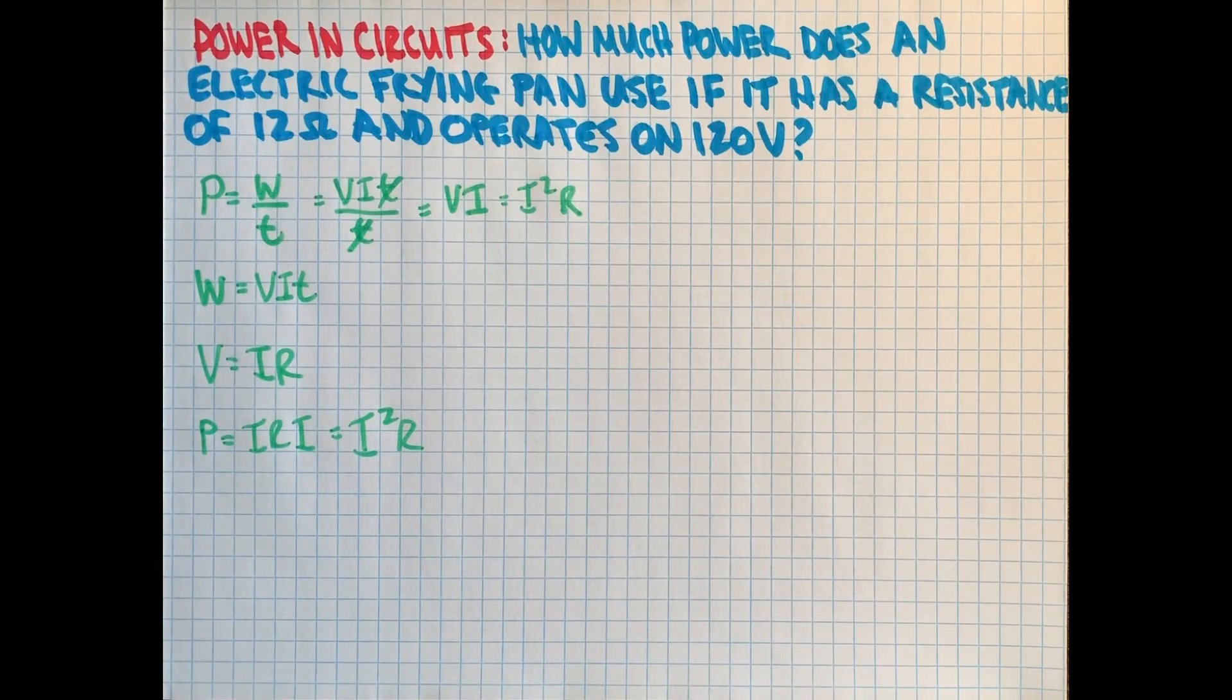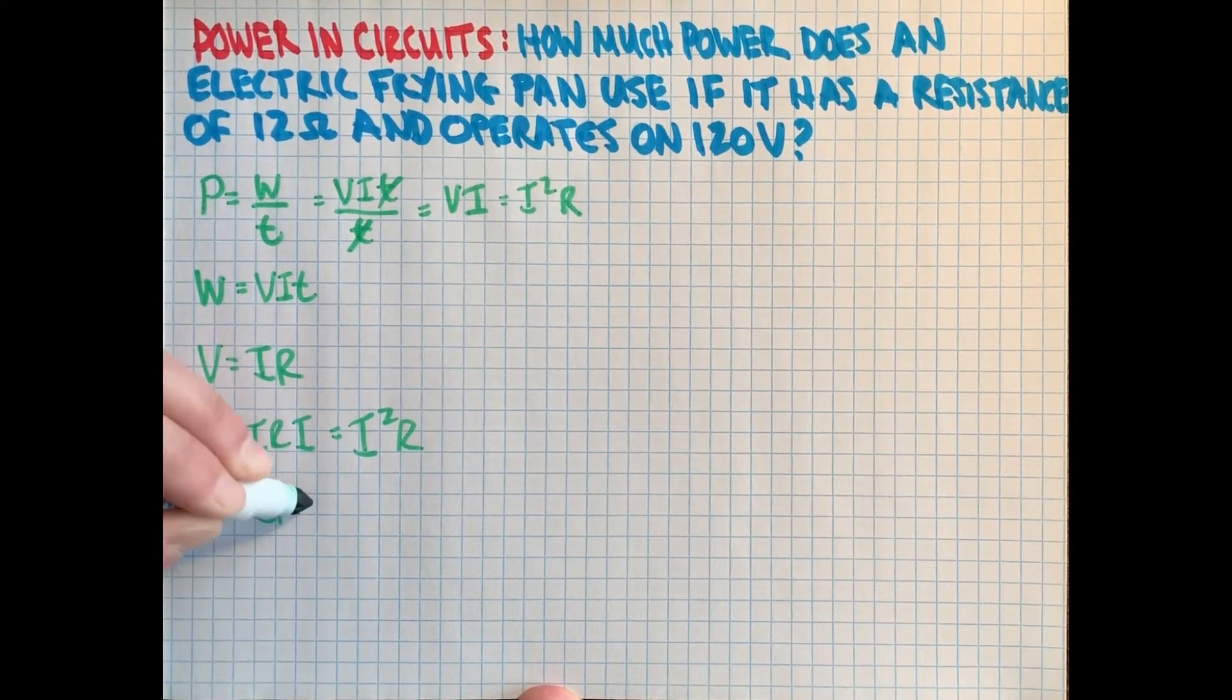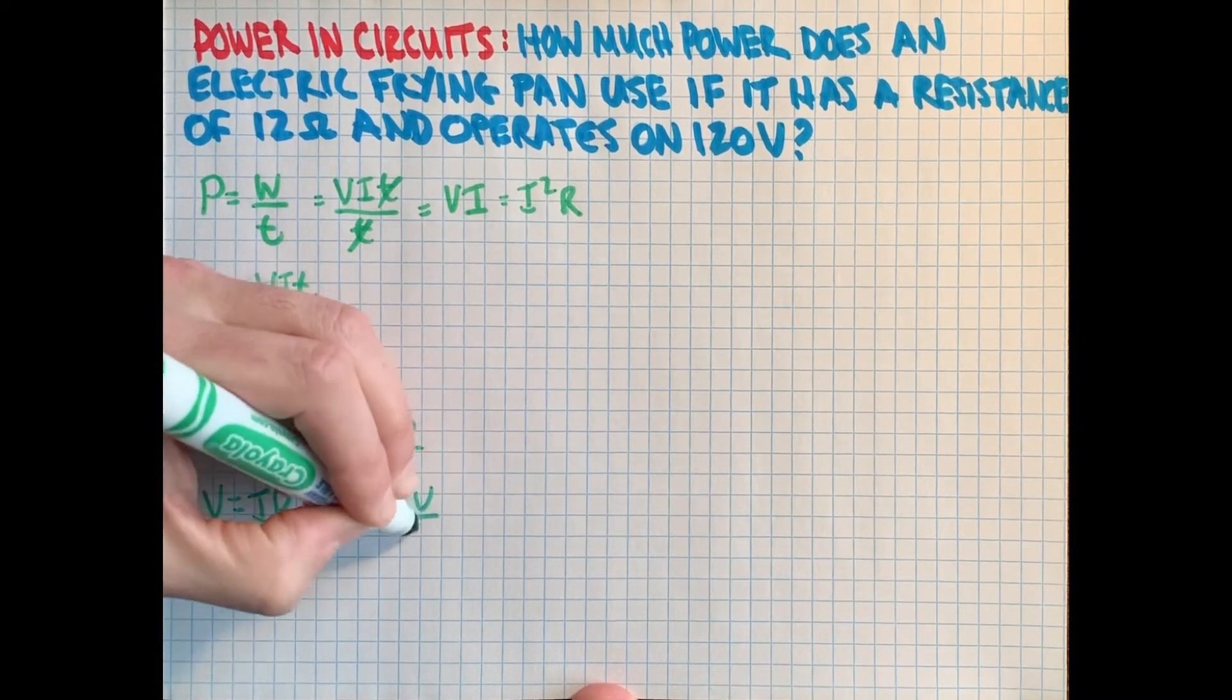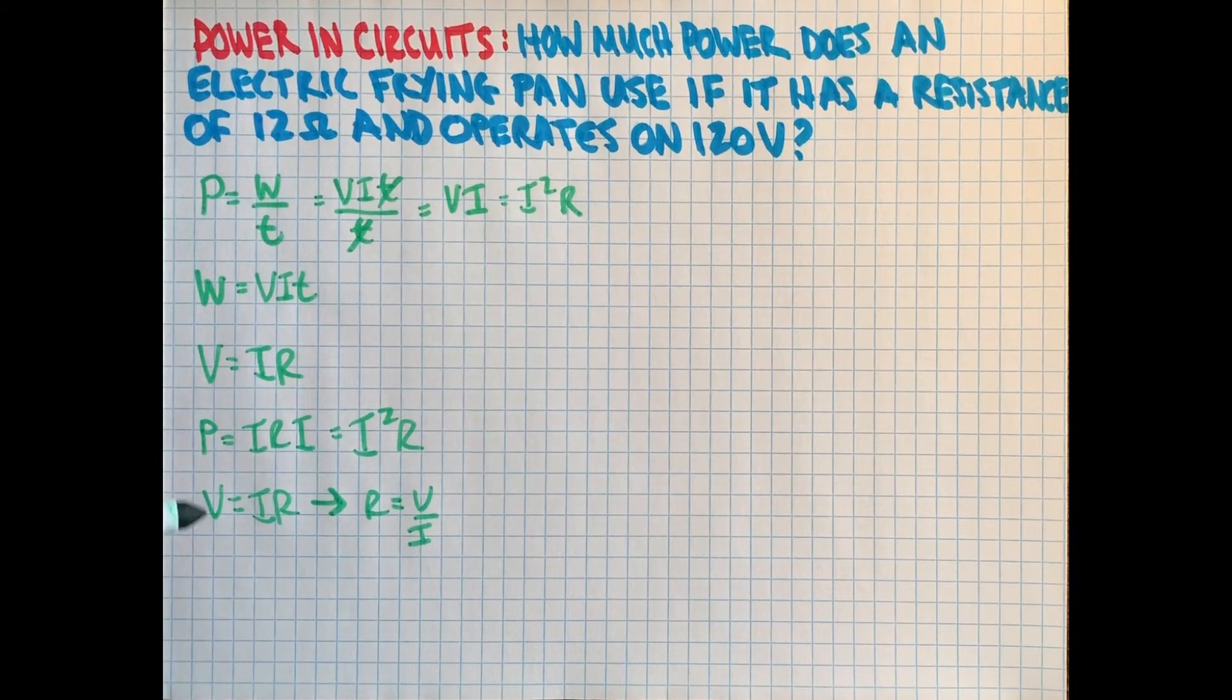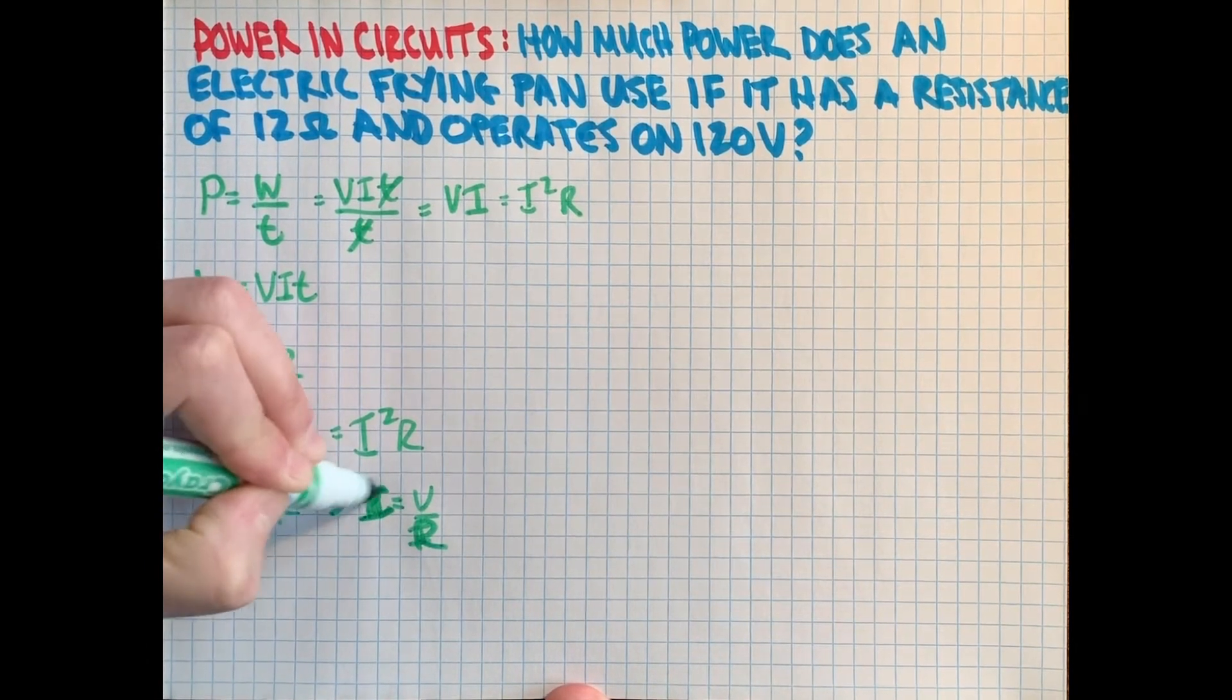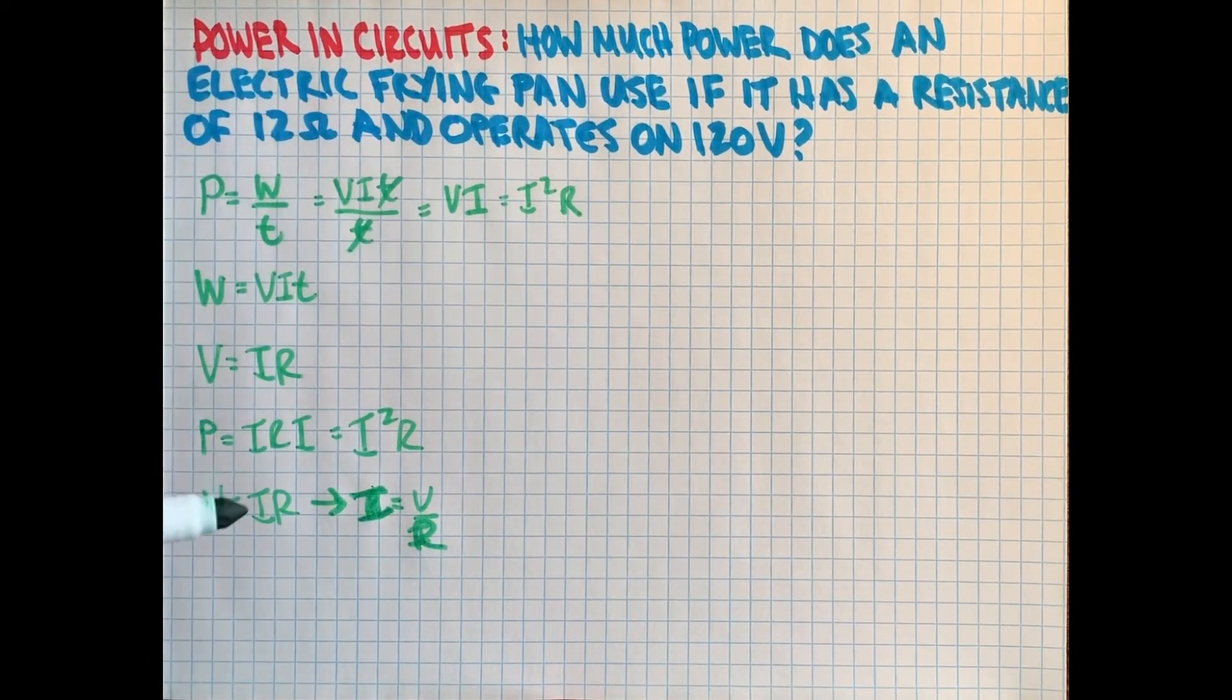If I'd asked a question that told us the current and the voltage, we could have used this. But I didn't. This question is asking about the resistance and the voltage, and it turns out we can use Ohm's Law again and rearrange for R here. R is V over I. And so if I put that into the formula here, sorry, this is I is V over R.